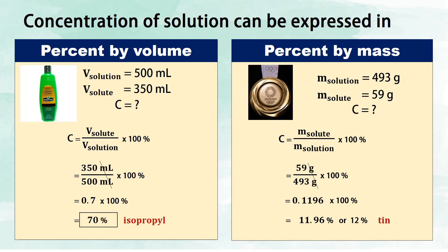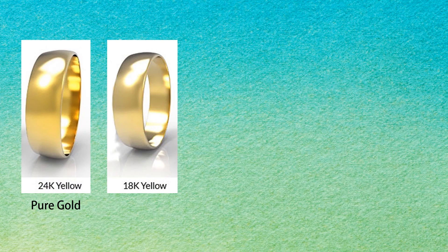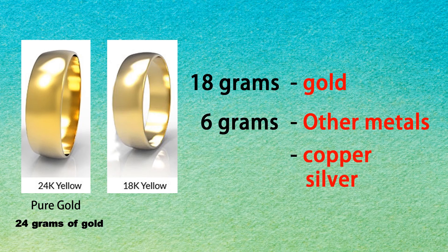Here are some solutions where you can directly see the percentage of solute or the concentration of solution. Jewelry: 18-carat gold. It is not pure gold because pure gold is 24 carats. It contains 24 grams of gold total, but this 18-carat jewelry contains 18 grams of gold, and the remaining 6 grams are other metals such as copper and silver. 18 grams plus 6 grams equals 24 grams.